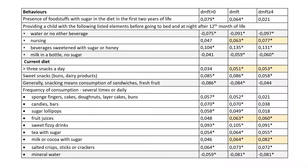Spearman's correlation showed a positive relationship between caries and the exposure of the child to sugar now and in the past. It seems that sweet snacks and drinks have the greatest impact. The analysis also confirmed that drinking water and milk without sugar and eating sandwiches and fresh fruit as snacks had a positive effect on the teeth.